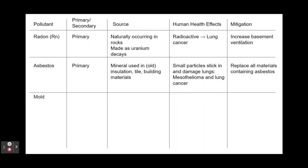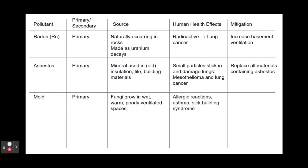Our next indoor pollutant is mold — a primary pollutant caused by fungi growing in warm, wet, poorly ventilated spaces like bathrooms. Mold inhalation can cause sick building syndrome, allergic reactions, and asthma. Mitigation involves increasing ventilation so spaces dry out faster, fixing leaky pipes, and removing all sources of standing water or constant moisture.